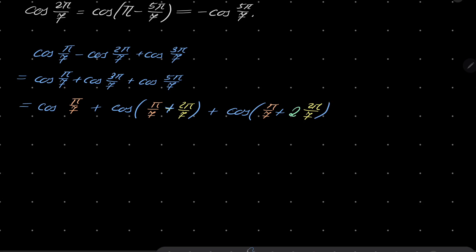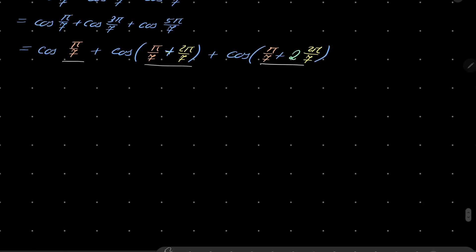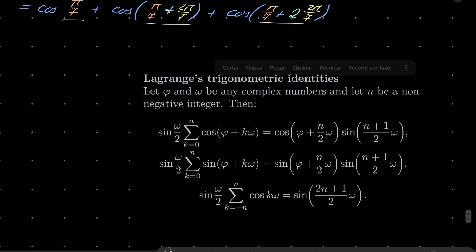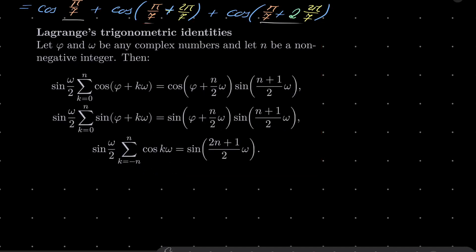All right, so now we have our sum and these arguments form an arithmetic progression, which means that we can use Lagrange identity. Let's go back. We are in this second case, where n equals 2, pi equals pi over 7, and omega equals 2 pi over 7. So using this identity right here,